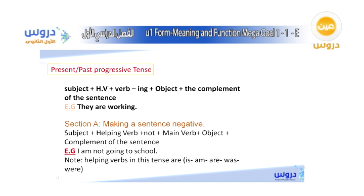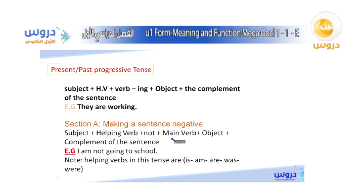Now let's move on to the present progressive or past progressive tense. The past progressive tense uses: subject + helping verb + verb with -ing. For example: 'They are working.' An important note: the helping verbs used in the past progressive or present progressive are 'is,' 'am,' 'are' for present, and 'was' or 'were' for past. To make a negative sentence with progressive tenses, as with simple present and simple past, we only add 'not' after the helping verb.